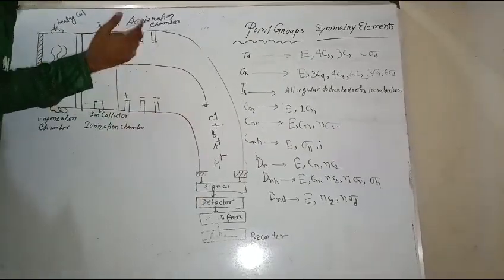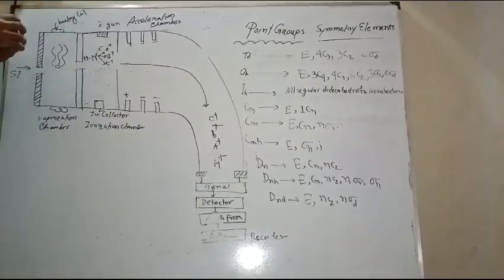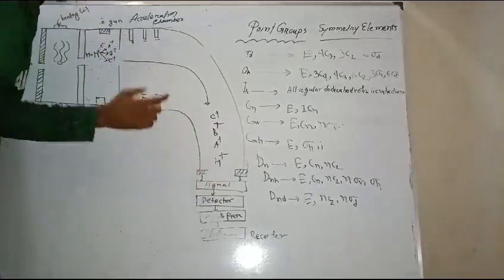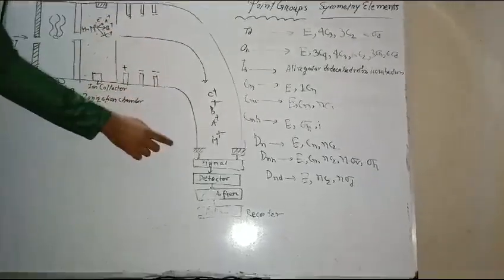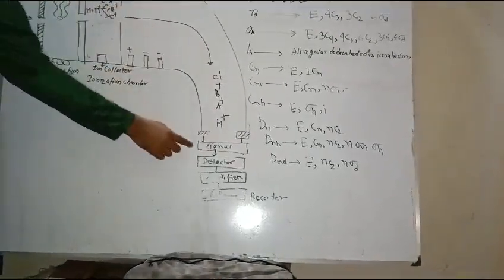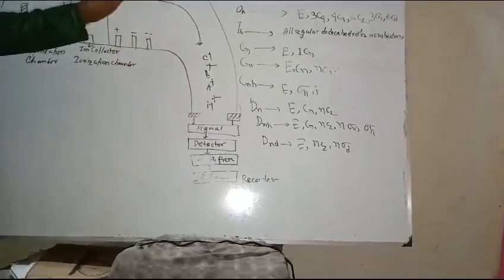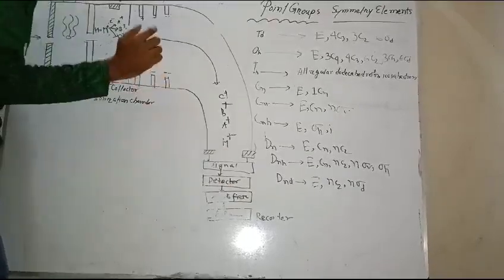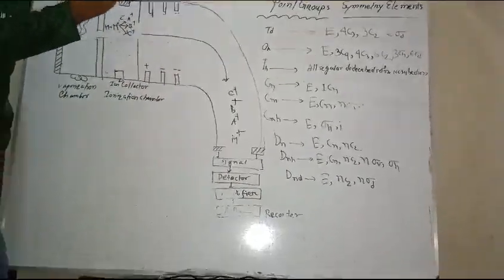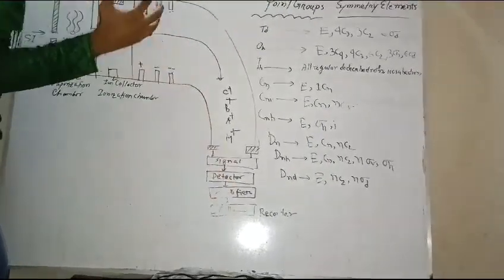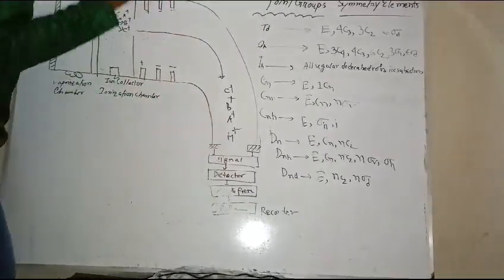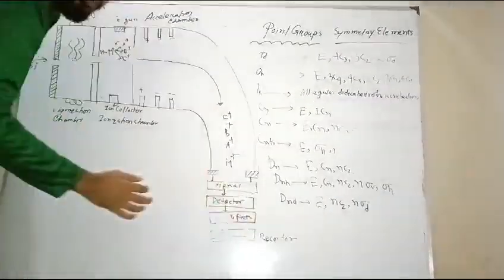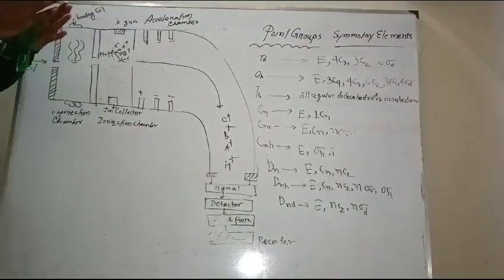These fragmented ions hit the detector as a signal, and the detector detects those signals. The detector then sends the signal to the amplifier, which amplifies those signals. The amplified signal goes to the recorder, which records those signals, and in this way we get the mass spectrum.